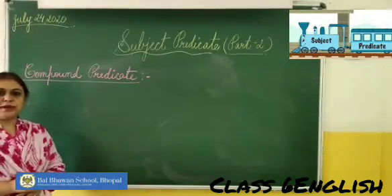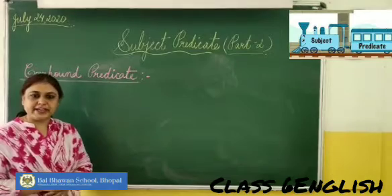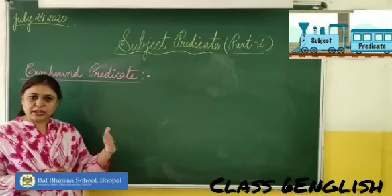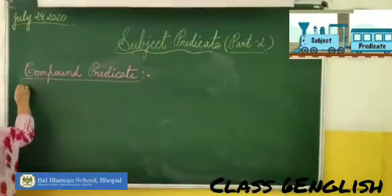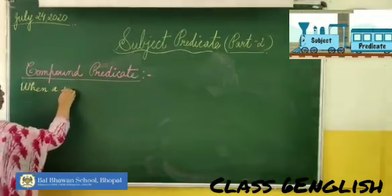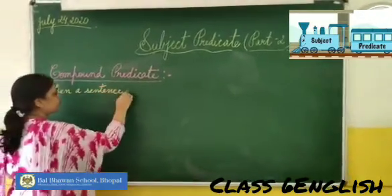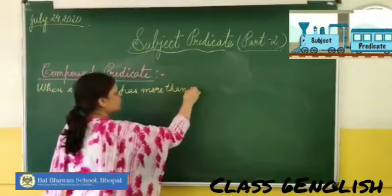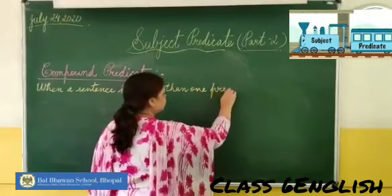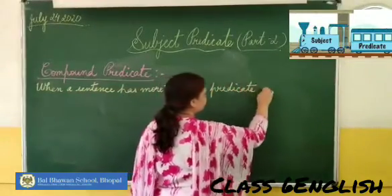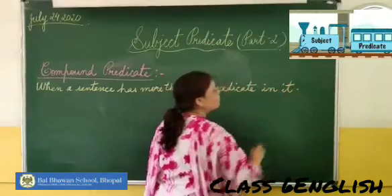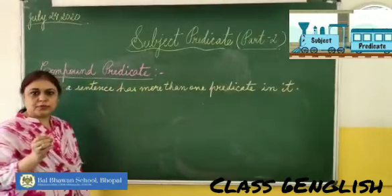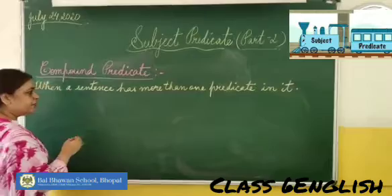Since we have learnt about compound subjects, now let's see what compound predicates are. A compound predicate is when a sentence has more than one predicate in it. The predicate means the verb — the rest of the sentence other than the subject. Let me show you some examples.